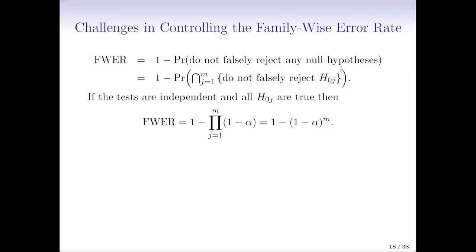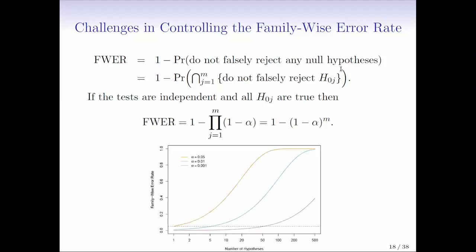And so what does that look like for different values of M and different values of alpha? So this plot here just shows for three different values of alpha, 5%, 1%, and 0.01%, and different values of M, what happens to that family-wise error rate? And the dotted line down the bottom is at the 5% level. So if you wanted to have a family-wise error rate of 5%, what value of M is going to work for that? And basically what this shows you is that when M gets even moderately large, you can end up with family-wise error rates that are close to 100%. So in that sense, the family-wise error rate is not helping you at all because you're almost certain to make at least one Type I error here.